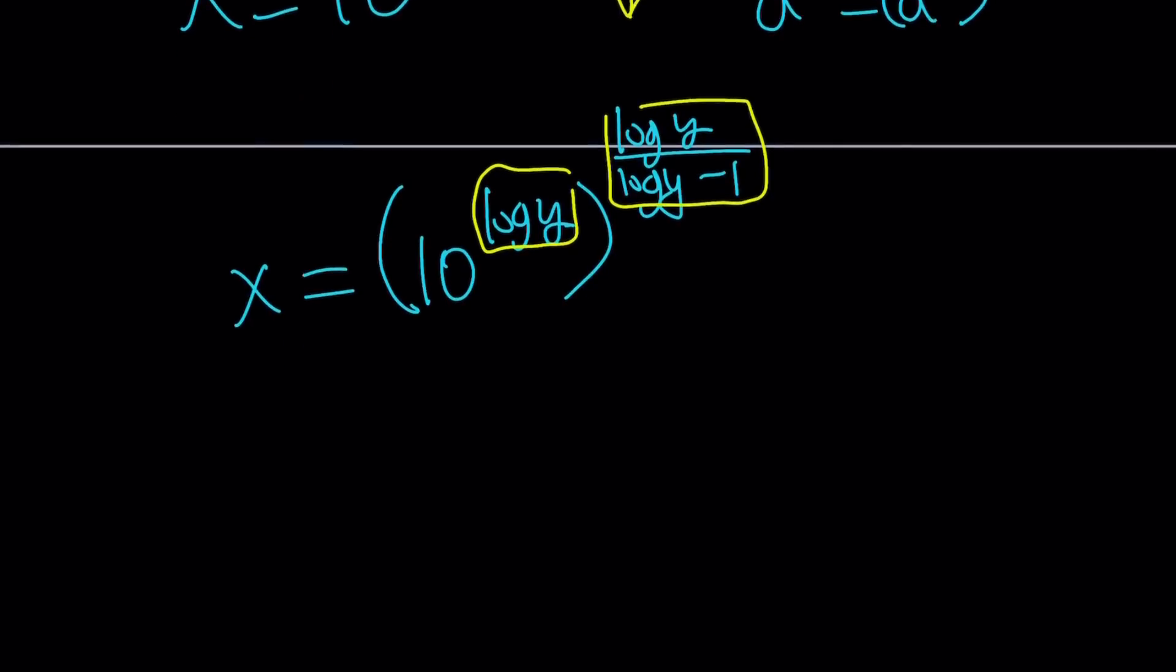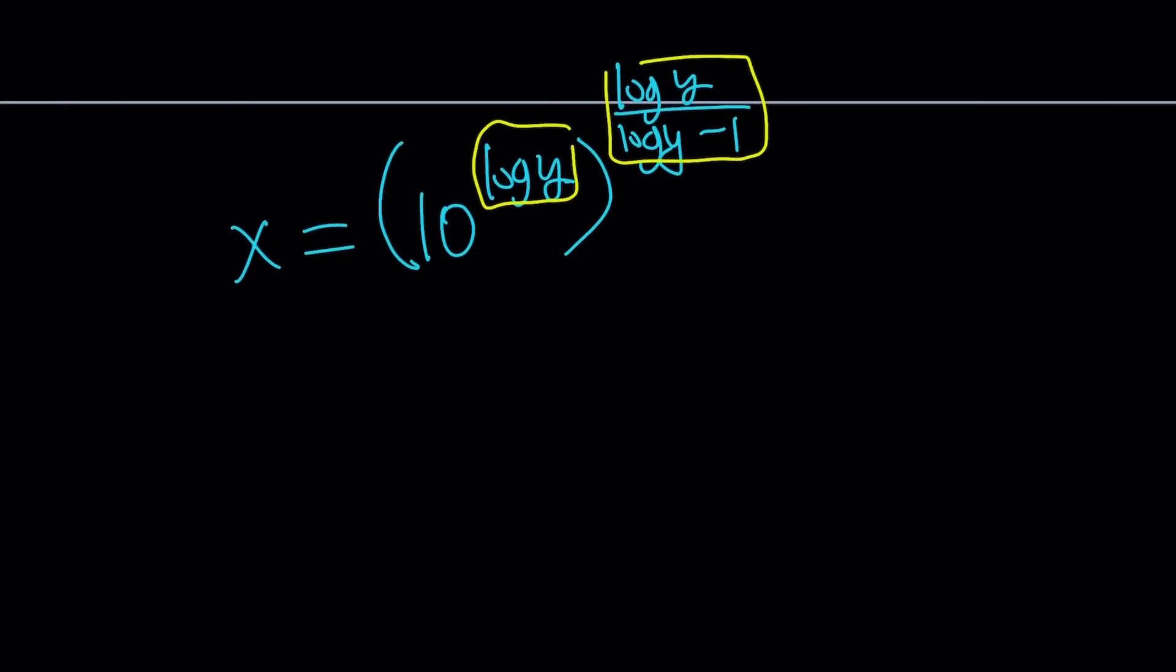Now we have inside the parentheses 10 to the power log y, which is just y. And you're like, why? Hopefully you know why. Then it is y to the power log y over log y minus 1. Again, you can write the bottom as log y over 10. I don't think it's a big deal.